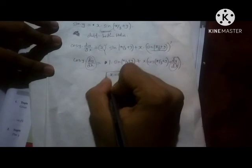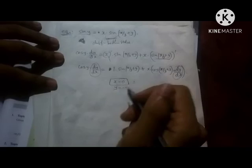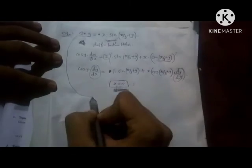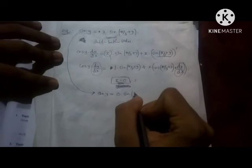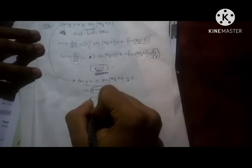Setting x equal to 0: from sin y equals x, when x is zero, sin y equals zero, so y is zero. The point is (0, 0).